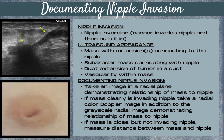To document a mass that's invading the nipple, you want to make sure that you take an image in the radial plane. This is because the ducts course radially in the breast, and this demonstrates the relationship of the mass to the nipple. If the mass is clearly invading the nipple, first take a radial image and then take a radial color Doppler image demonstrating the relationship of the mass to the nipple.